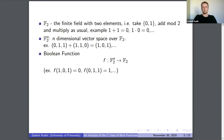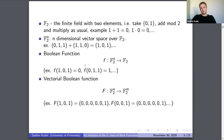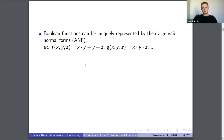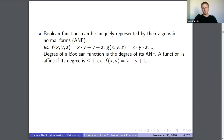A vectorial boolean function maps F2^n to F2^m, mapping a sequence of zeros and ones to another sequence, possibly of different length. A boolean function can be represented in algebraic normal form (ANF) as a polynomial with no powers — no x squared, x cubed, etc. — making it unique. The degree of the function is just the degree of this polynomial.